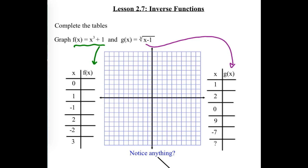For function f, we're taking an x value, cubing it, and adding one. If we cube zero and add one, we get one. Cube one and add one, we get two. For the purple one, g of x, we're taking the cube root of x minus one. Plug in one: one minus one is zero, cube root is zero. Plug in two: two minus one is one, cube root is one. Plug in zero: zero minus one is negative one, cube root of negative one is negative one. Plug in nine: nine minus one is eight, cube root of eight is two. And negative seven minus one is negative eight, cube root is negative two.